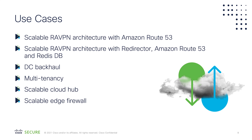One of the biggest use cases for accessing resources in public cloud security is our VPN use case, and most of our customers are looking for a scalable infrastructure that can scale up as and when required, and when resources are not required, it should scale down. We have a Cisco Secure Firewall Cloud Native architecture with Amazon Route 53 that can load balance traffic based on Route 53 weighted average load balancing.